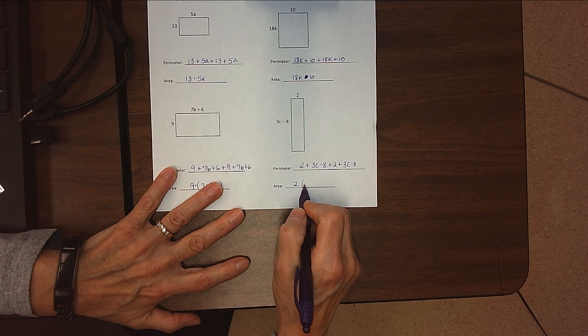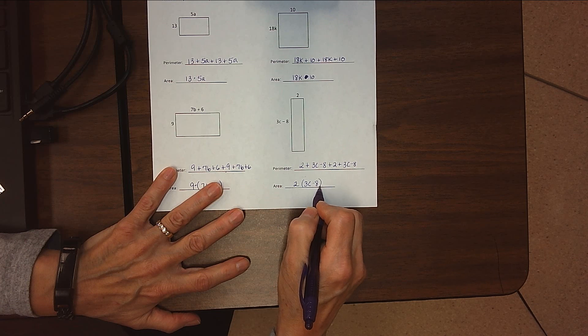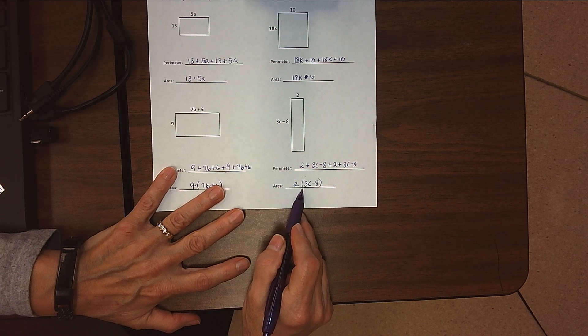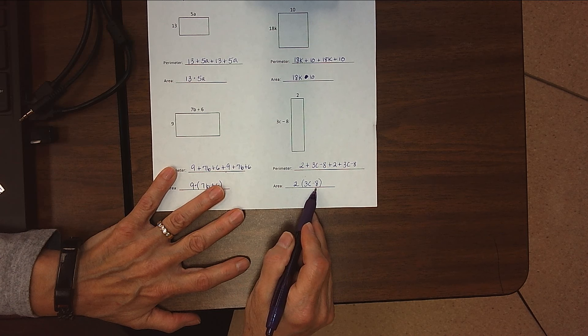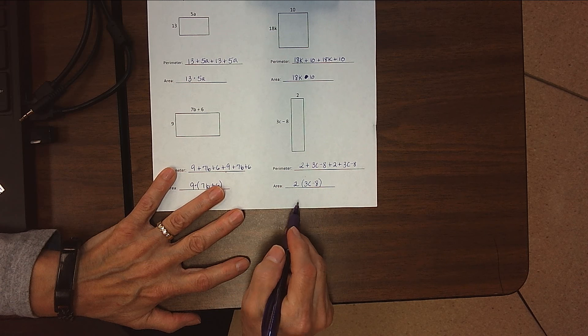So we would read this as 2 times the quantity 3c minus 8. That's how our area looks for that one. Hope you had good success with that.